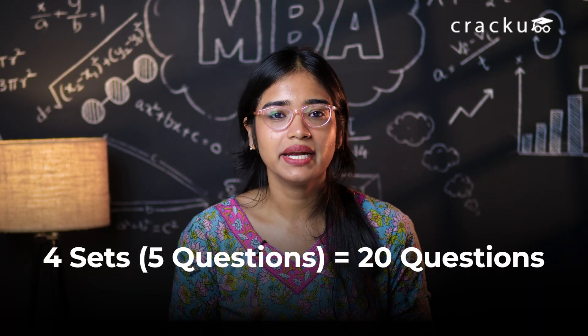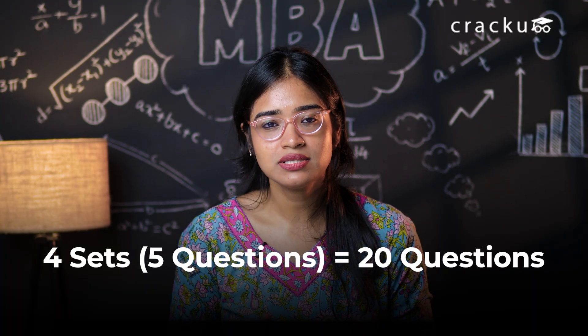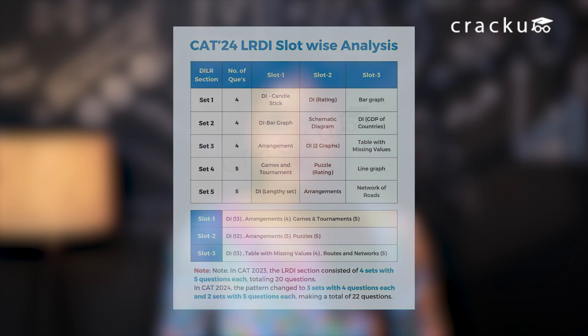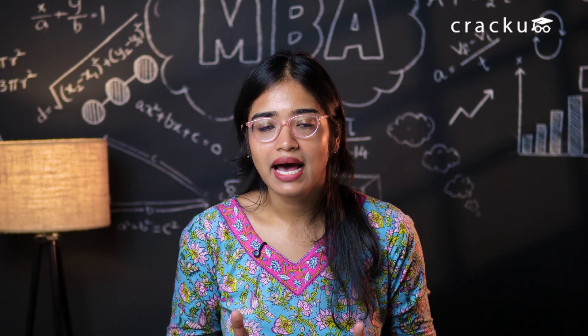From CAT 2021 to 2023, the DILR section consisted of four sets with five questions each, totaling 20 questions. But in CAT 2024, the pattern changed to three sets with four questions each and two sets with five questions each, making a total of 22 questions. Although CAT 2024's DILR section was on the easier side, it would be better to practice difficult sets as well, as CAT is highly unpredictable.